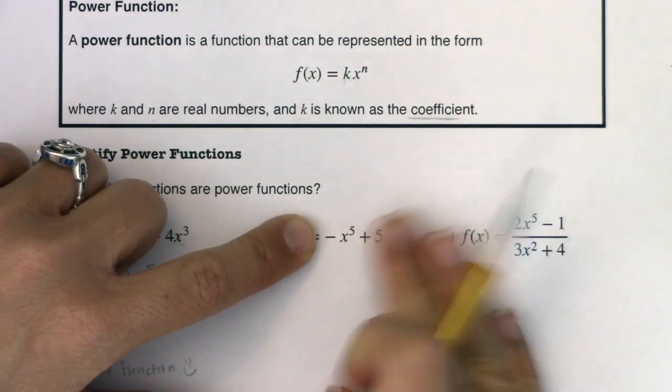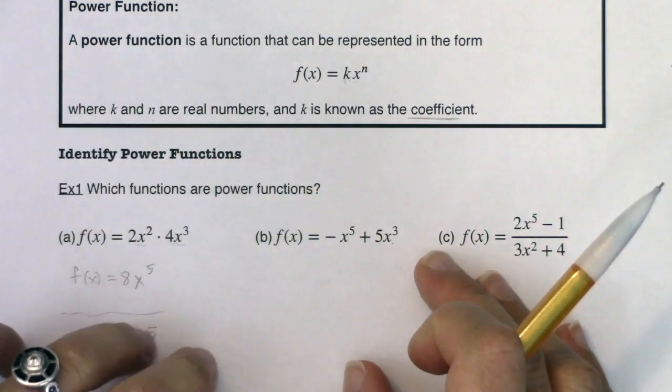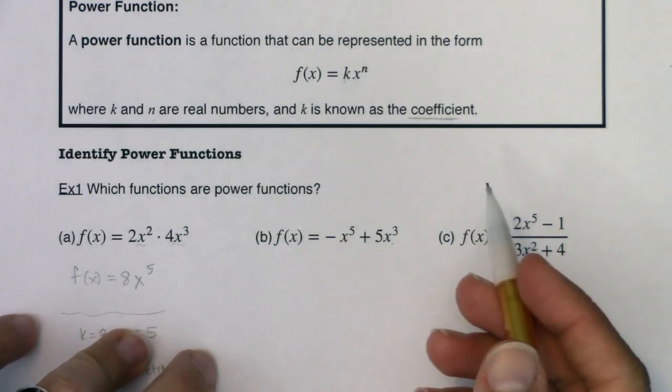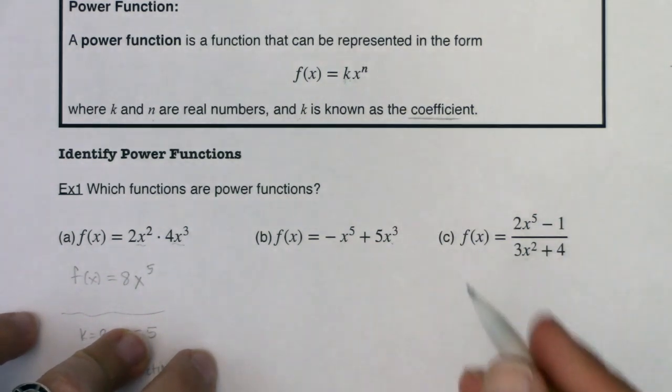This function here is a sum of individual power functions because negative x to the fifth, that all by itself is a power function. And 5x cubed, that all by itself is a power function. But believe it or not, when you combine them, it's not a power function anymore.